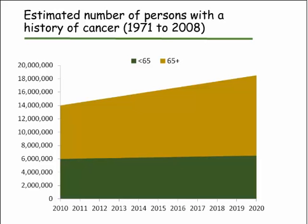This graph shows the estimated number of persons with a history of cancer, diagnosed between 1971 and 2008. The y-axis shows number of survivors in millions, and the x-axis shows the year. The green shaded area represents survivors under 65, which stays steady at about 6 million. But the 65-plus survivor numbers have grown from 6 to 14 million, and by 2020 will approach 16 million — a tremendous increase. The elderly survivor population is growing substantially.